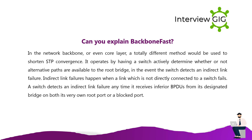Can you explain Backbone Fast in the network backbone or core layer? A different method is used to shorten STP convergence. It operates by having a switch actively determine whether alternative paths are available to the root bridge when an indirect link failure is detected. Indirect link failures happen when a link not directly connected to a switch fails. A switch detects this any time it receives an inferior BPDU from its designated bridge on its root port or a blocked port.